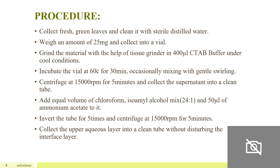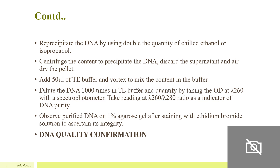Collect the upper aqueous layer into a clean tube without disturbing the interface layer. Precipitate the DNA by adding double the quantity of chilled ethanol or isopropanol, then centrifuge to pellet the DNA. Discard the supernatant, dry the pellet, and add 50 µl of TE buffer, then vortex to mix. Dilute the DNA 1000 times in TE buffer and quantify by measuring OD at 260 nm with a spectrophotometer. Take readings at λ260/λ280 ratio as an indicator of DNA purity.